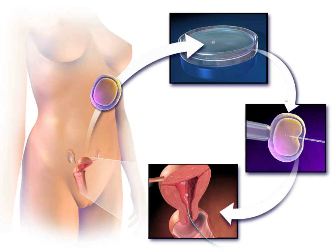Autologous endometrial co-culture is a possible treatment for patients who have failed previous IVF attempts or have poor embryo quality; the patient's fertilized eggs are placed on top of a layer of cells from the patient's own uterine lining, creating a more natural environment for embryo development. In zygote intrafallopian transfer (ZIFT), egg cells are removed from the woman's ovaries and fertilized in the laboratory, and the resulting zygote is then placed into the fallopian tube. Cytoplasmic transfer involves injecting the contents of a fertile egg from a donor into the infertile egg of the patient along with the sperm.